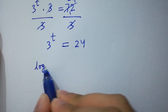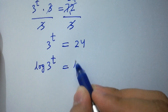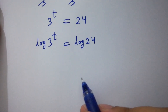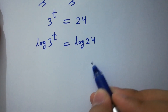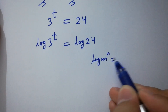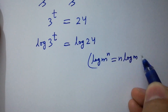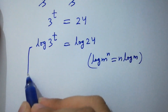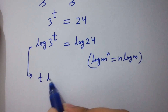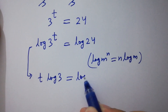Take log on both sides: log 3 to the power t equals log 24. As we know, log m to the power n equals n log m.